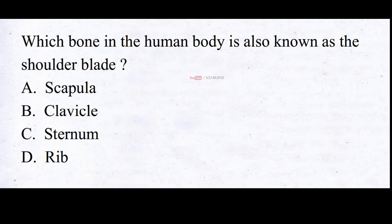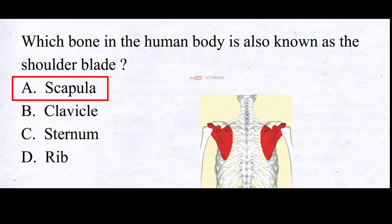Which bone in the human body is also known as the shoulder blade? A. Scapula, B. Clavicle, C. Sternum, D. Rib. And the correct answer is A. Scapula. The scapula is commonly known as the shoulder blade due to its location and shape. The term 'blade' is used to describe the flat triangular shape of the scapula, which resembles the shape of a blade or a wide flat knife.